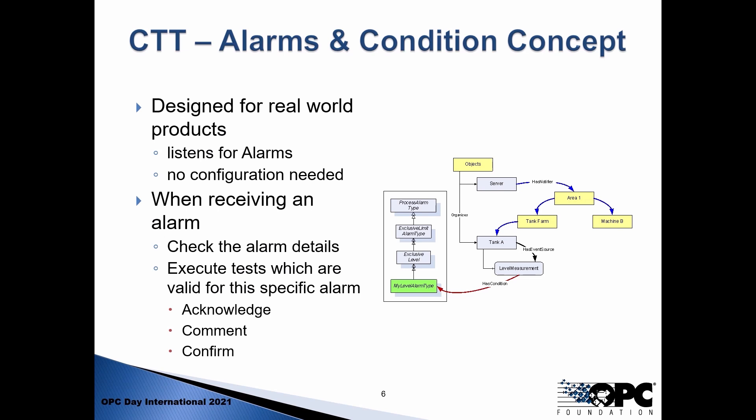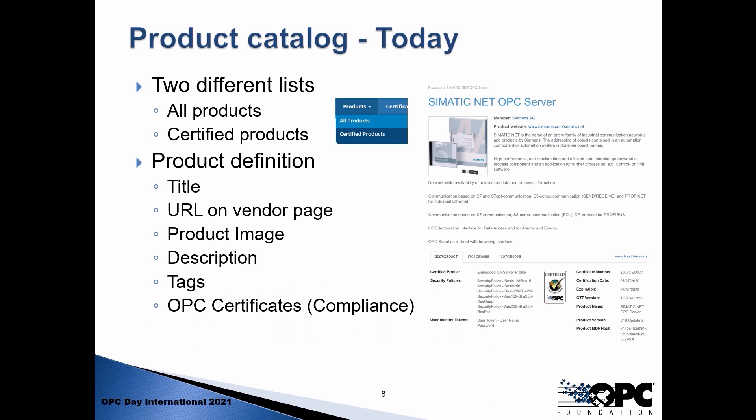As the next step we walk through the state machine, making sure that everything we should be able to do with this alarm — like acknowledging it, providing a comment, confirming it — is possible to do with the server. So this is everything that we have as news for the compliance test tool, which gets me to my next topic: the product catalog.